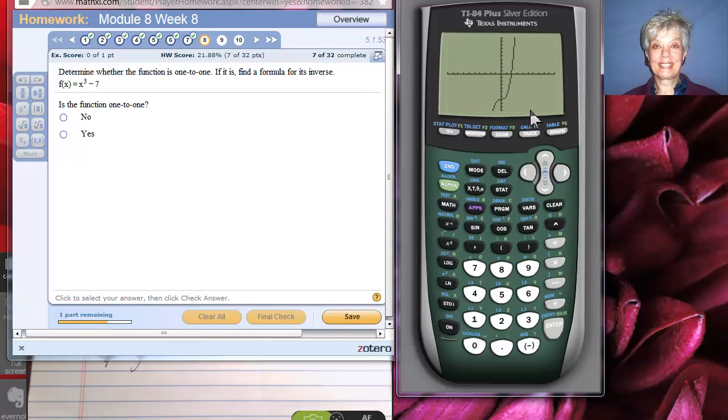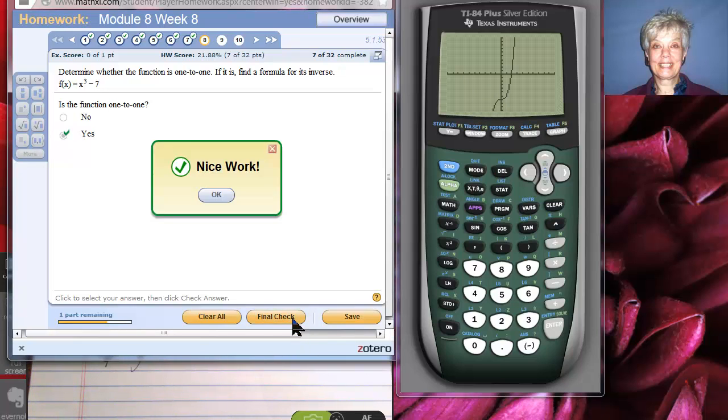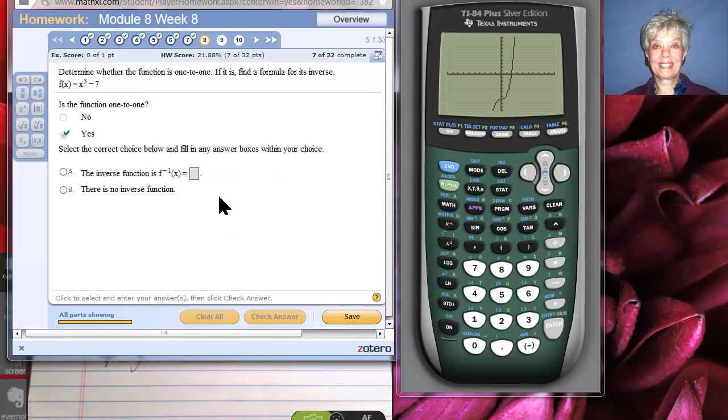And yes, imagine drawing a lot of horizontal lines through it. Those lines will only intersect the graph at one point. Therefore, x to the 3rd minus 7 is 1 to 1. Now it wants me to find the inverse.